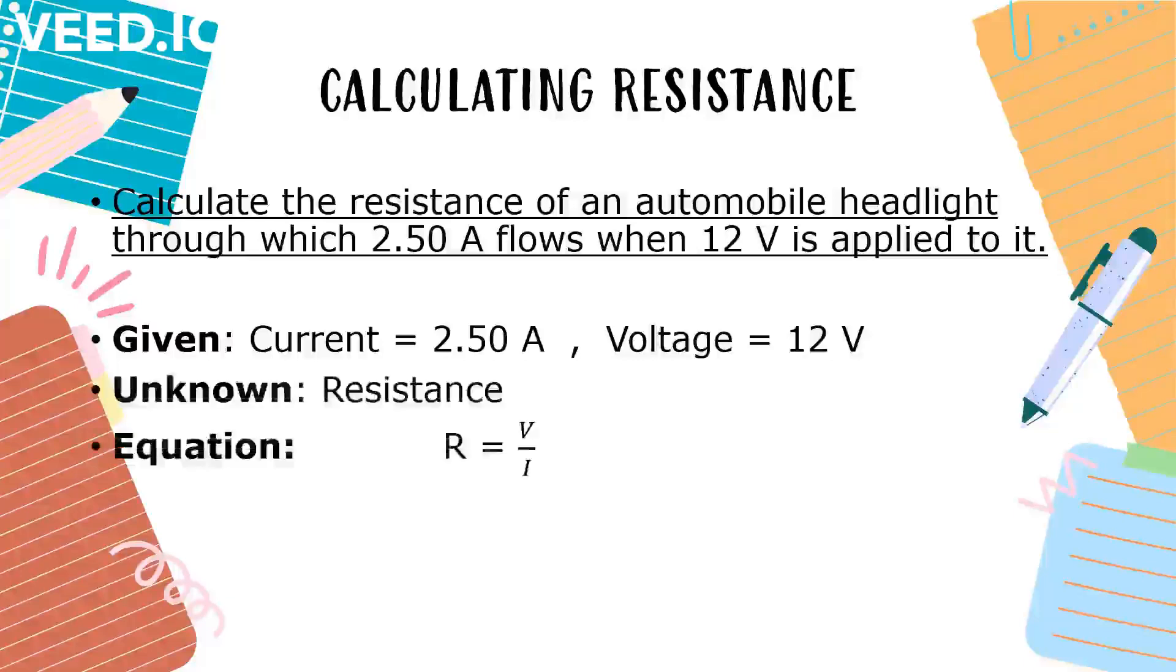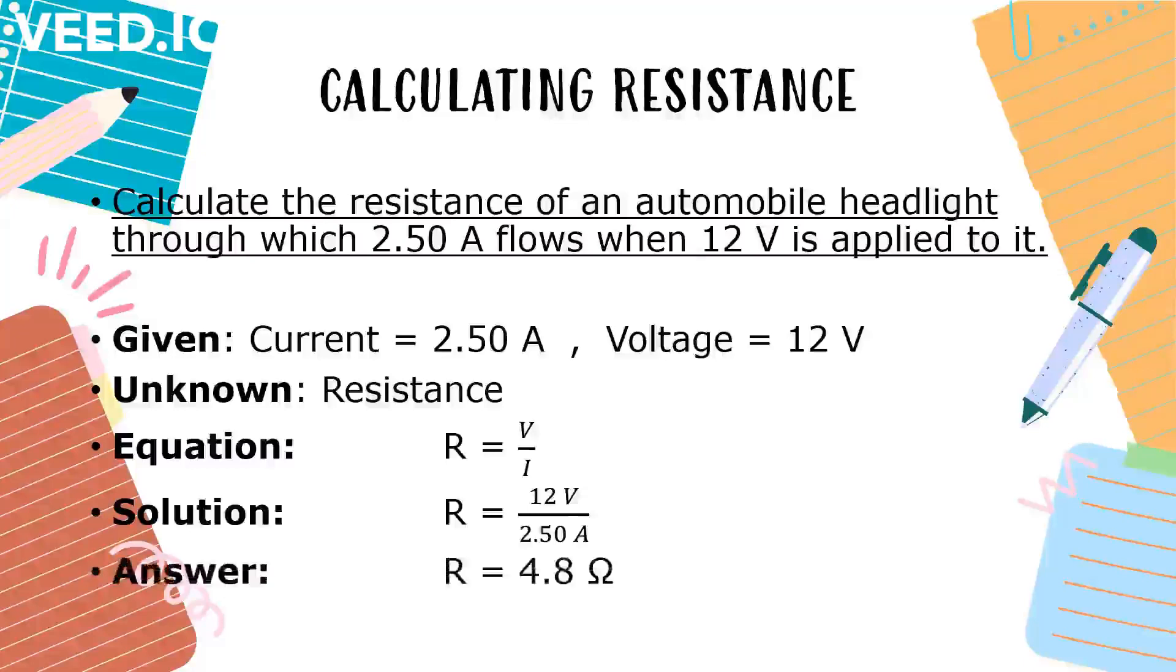Equation will be, R is equal to V divided by I. Solution, R is equal to 12 volts divided by 2.50 amperes. The answer is, R is equal to 4.80 ohm.